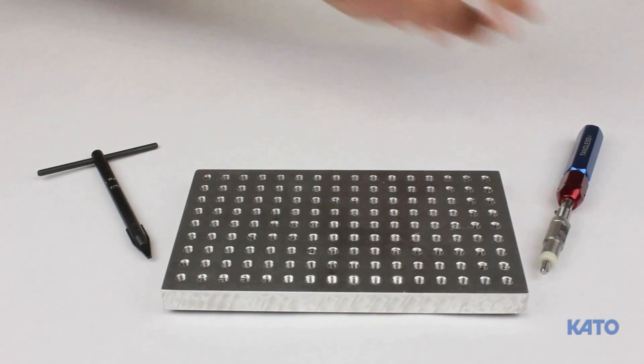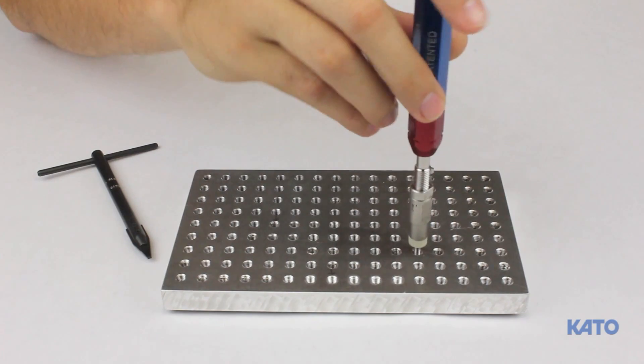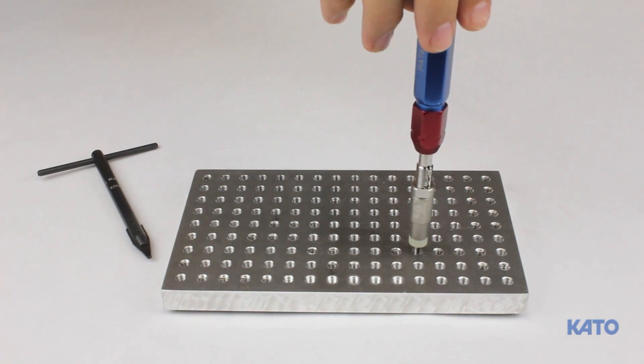Now we'll demonstrate how to use the Tangless Removal Tool. Thread the Tangless Removal Tool into the installed insert a few turns. You should feel and hear it click once the paw reaches the notch.